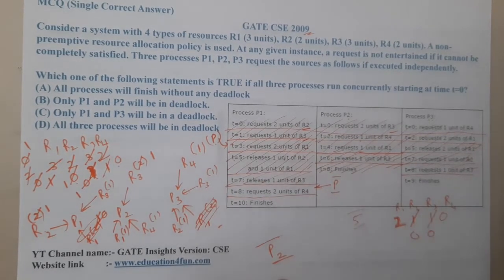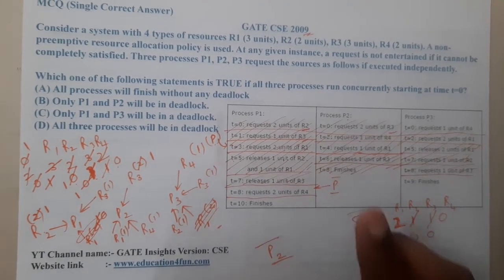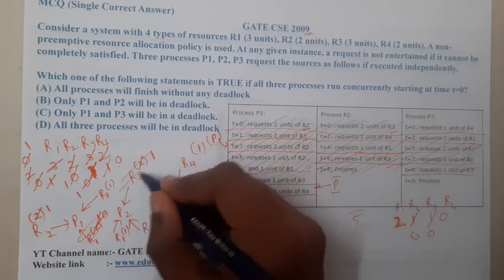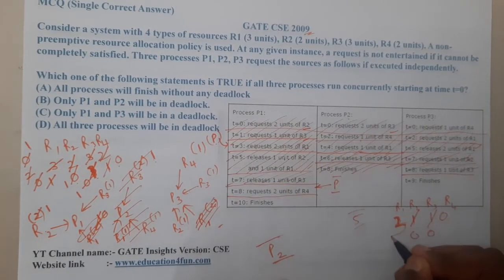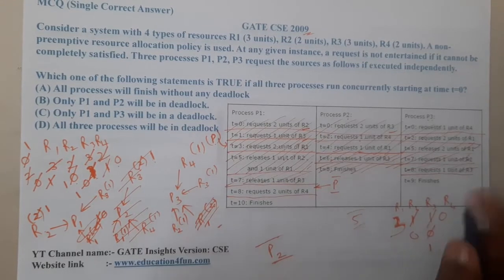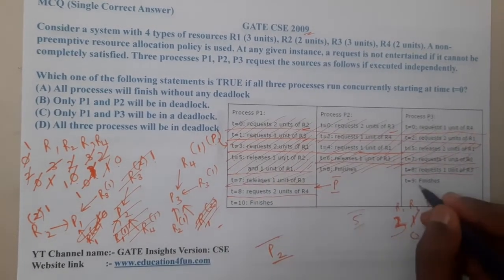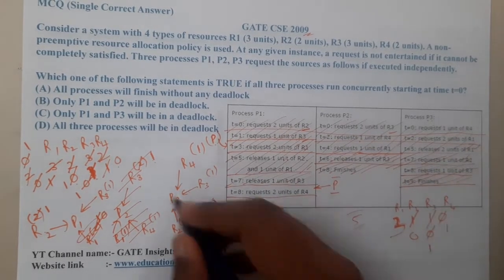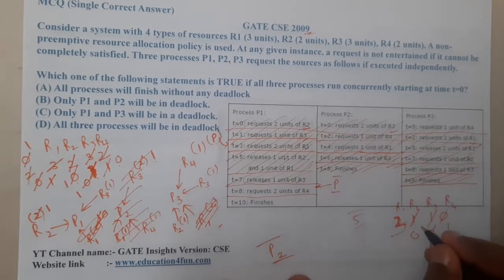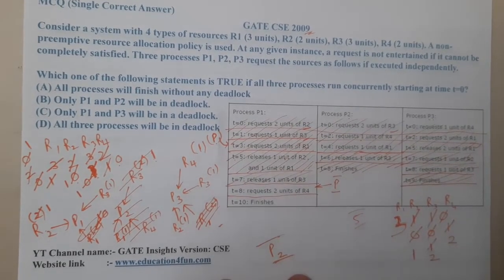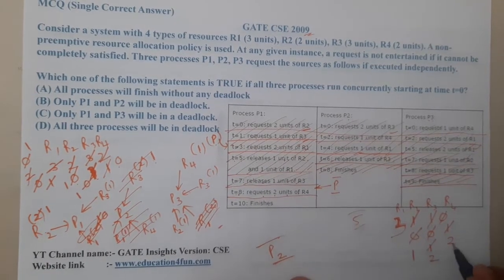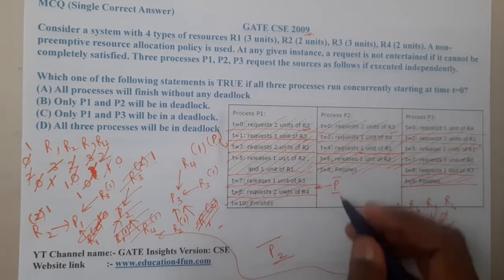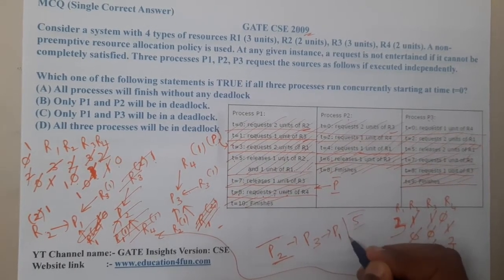Once P2 finishes, it releases all its held resources: 1 unit of R1 (becomes 3), 1 unit of R3 (becomes 1), and 1 unit of R4 (becomes 1). Then when its remaining allocation is freed, R2 becomes 1, R3 becomes 2, and R4 becomes 2. Now with 2 units of R4 available, P1's blocked t8 request for 2×R4 can be fulfilled, and P1 can complete. The safe execution sequence is P2 → P3 → P1.